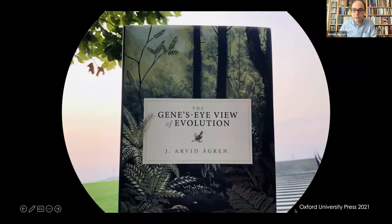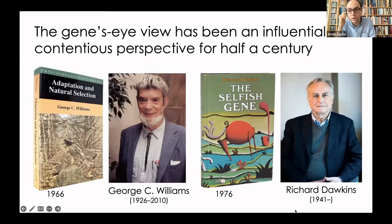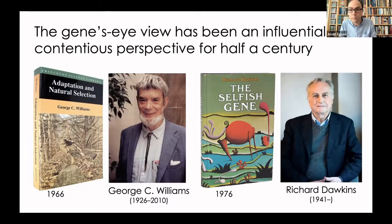The gene's eye view of evolution is a way of thinking that has been simultaneously influential but also contentious for the past half century. It was first introduced by the American George Williams in a book called Adaptation and Natural Selection, published in 1966. I think this is a hugely important book — probably one of the most important books of the second half of the 20th century in evolutionary theory.